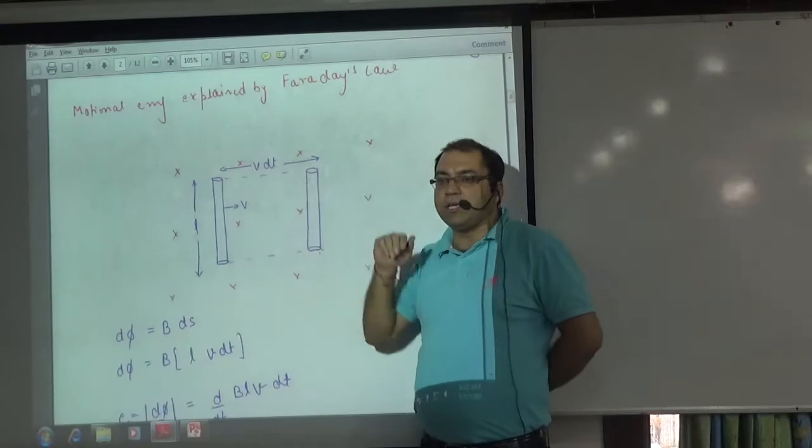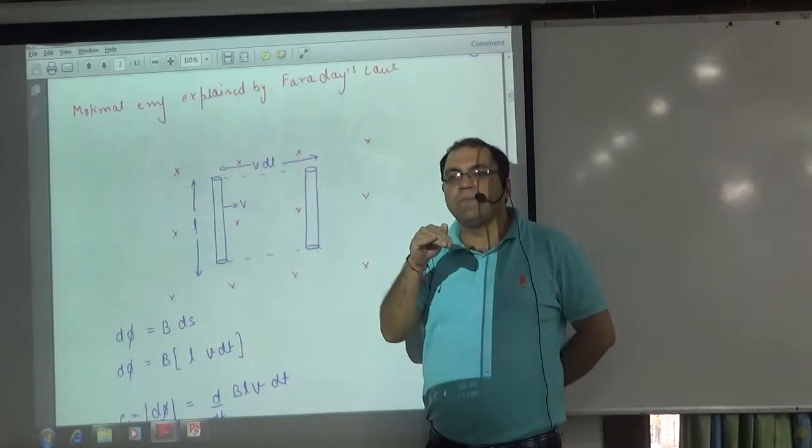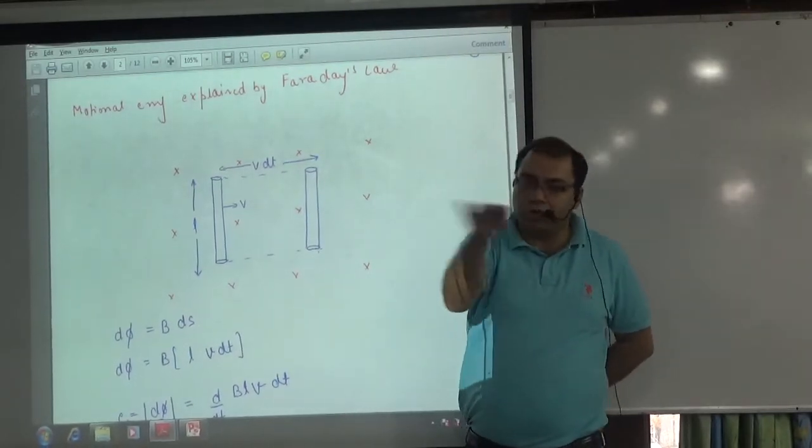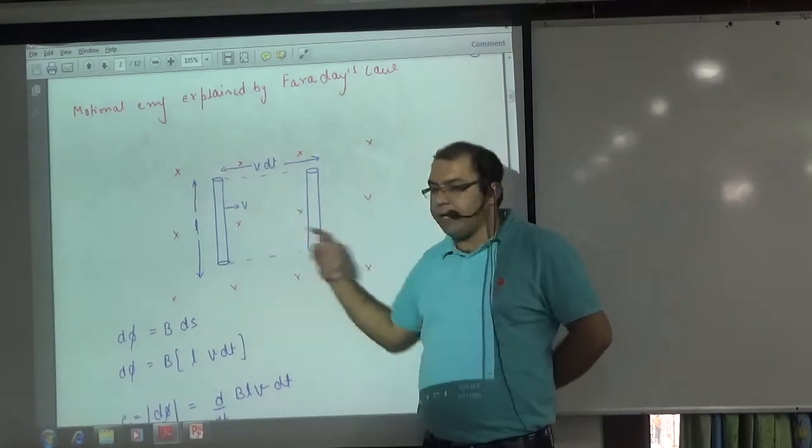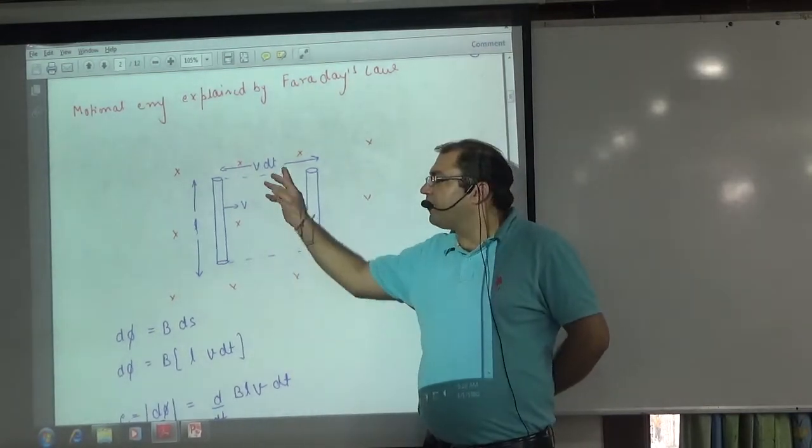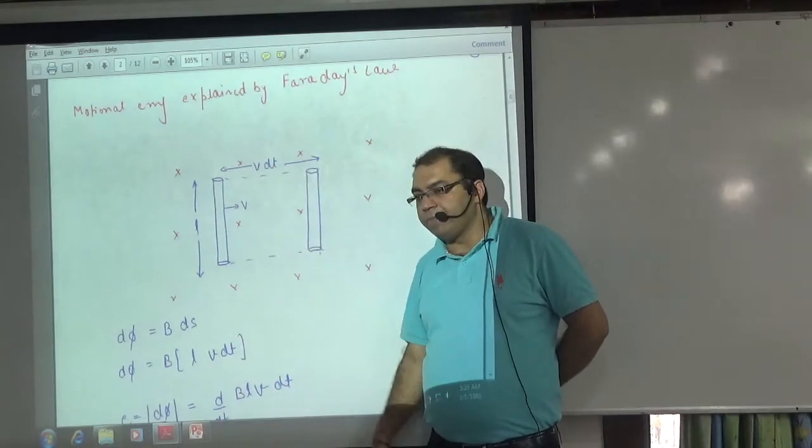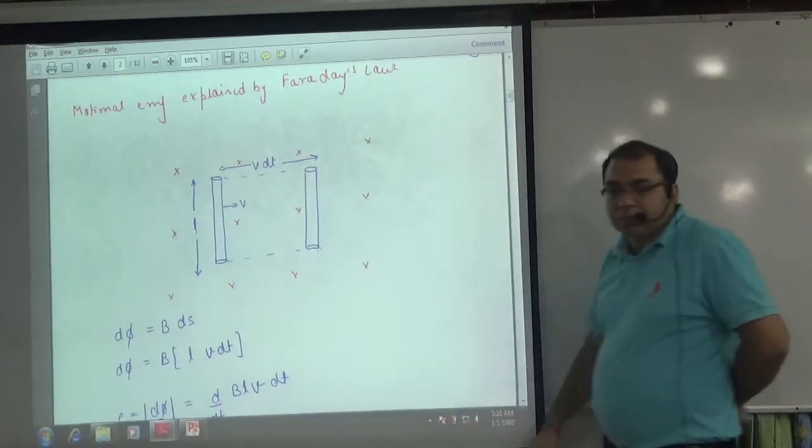Very small time dt, so how much length is covered? S equals Vt, V into dt. Length L is L. So area is covered: this into this, L into V into dt area.